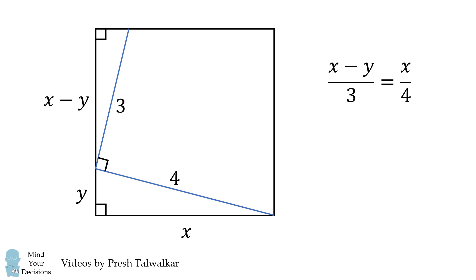We'll solve this equation for Y. We'll first cross multiply, then we'll distribute, then we'll simplify. We get X is equal to 4Y, which means Y is equal to X over 4.